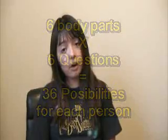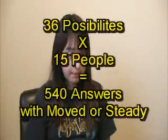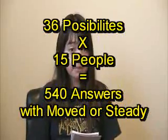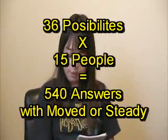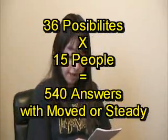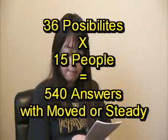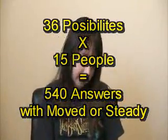I asked a total of 15 people. So I multiplied 36 possibilities times 15 people, and my results were 540 answers — recorded as either moved or steady.